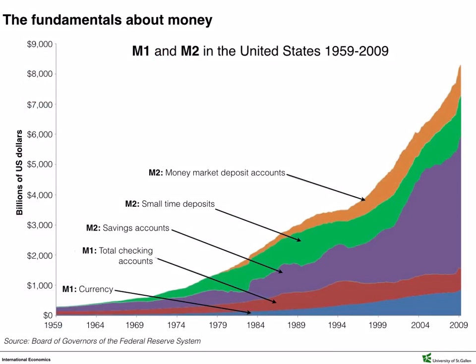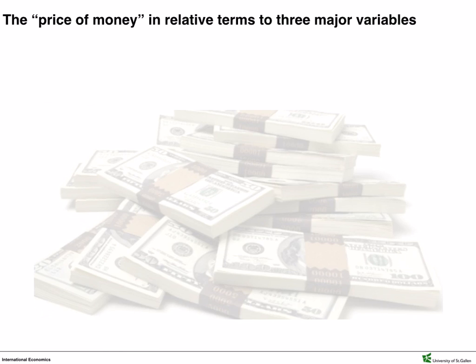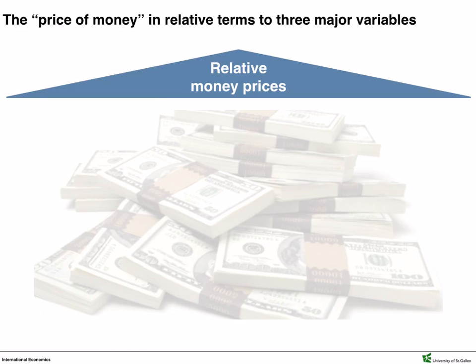The illustration provides an overview of the proportions of M1 and M2 components in the US from 1959 to 2009 and the rising amount of total savings accounts. The price of money affects variables like interest rates, exchange rates, and the aggregate price level. Let's look at these variables a little closer.